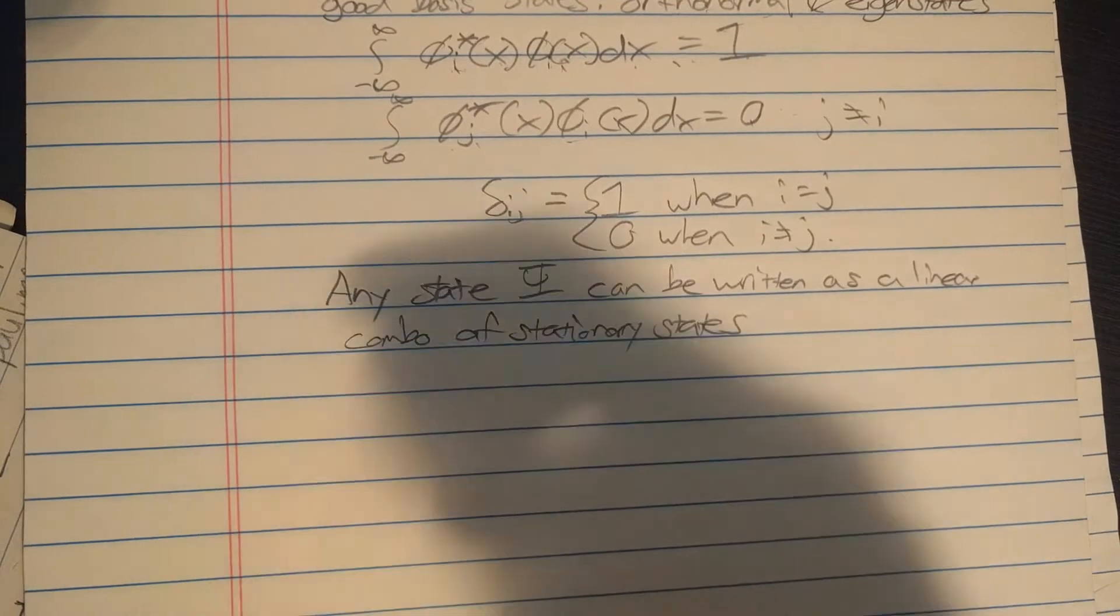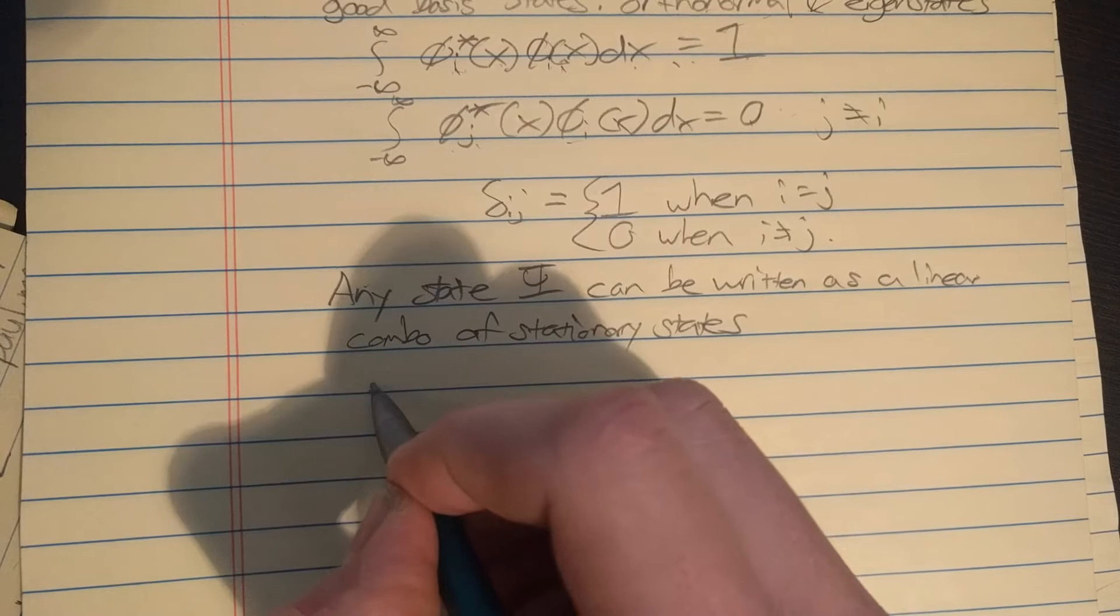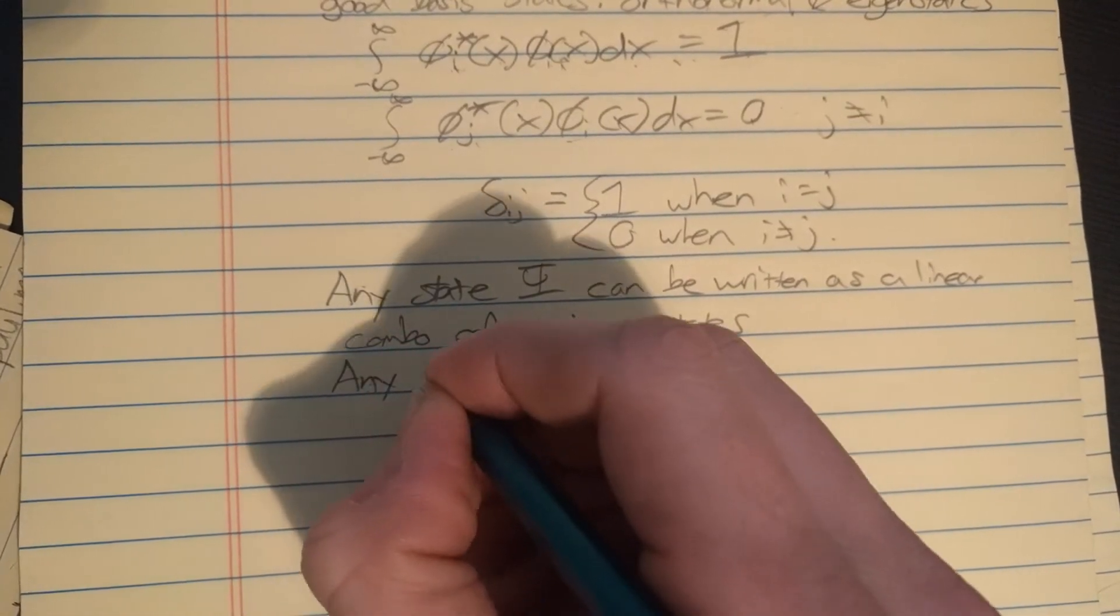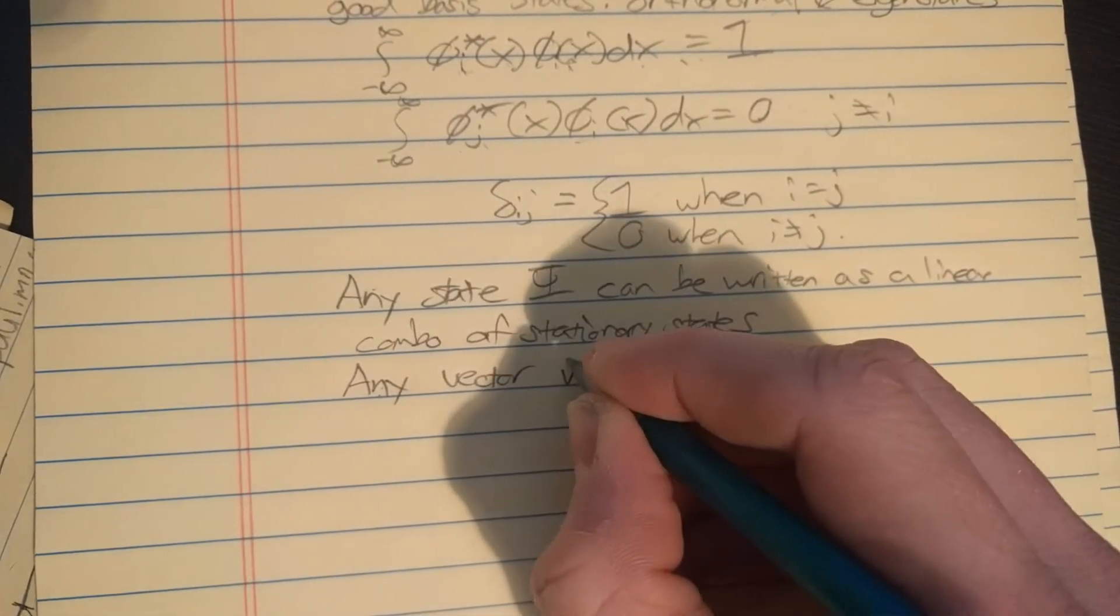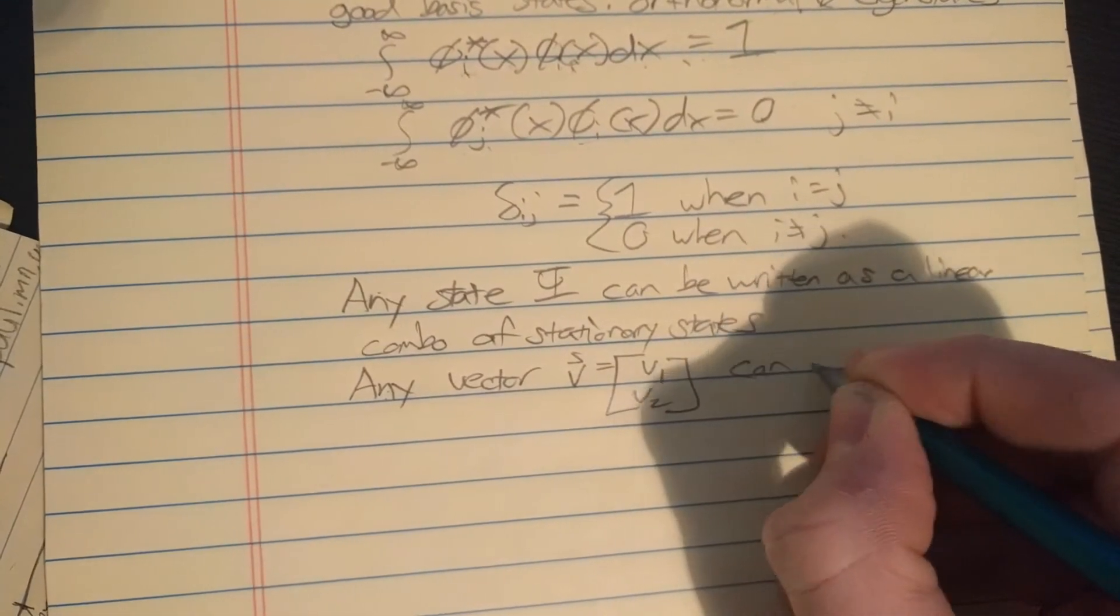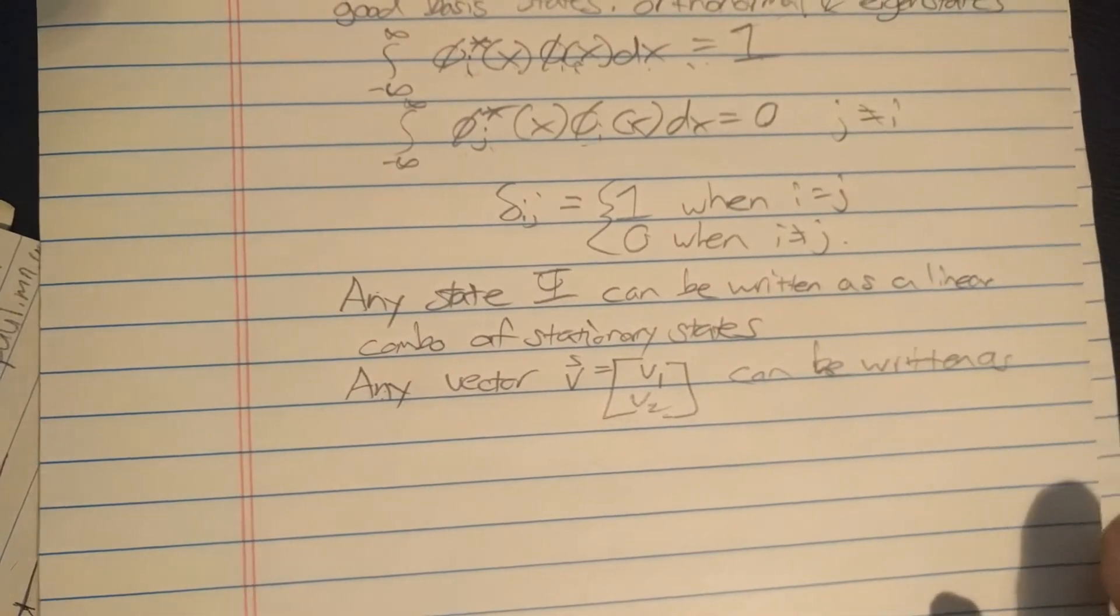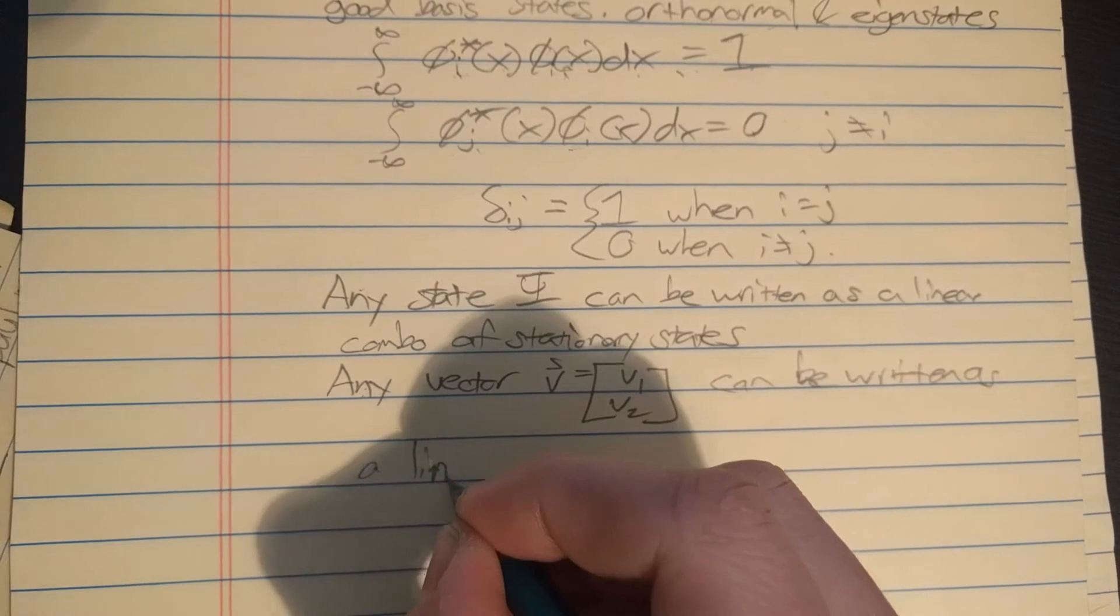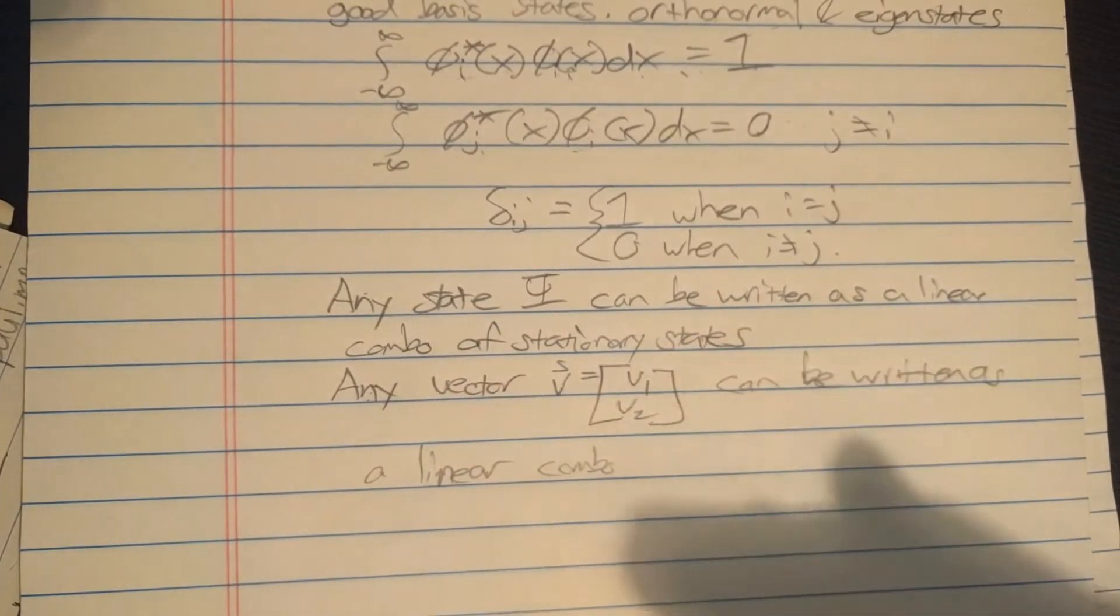First I should say any state, let's call that state big psi, can be written as a linear combination of stationary states. Let's think about a 2D plane first.